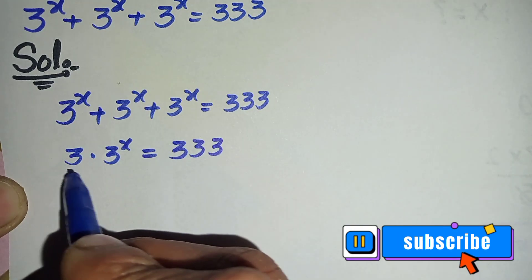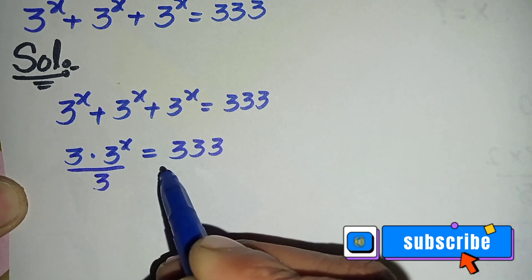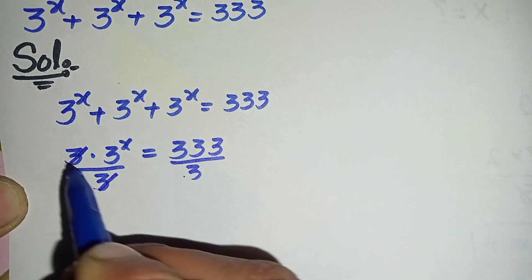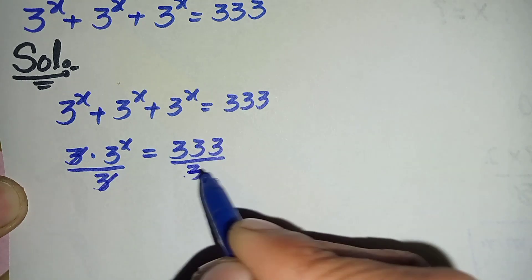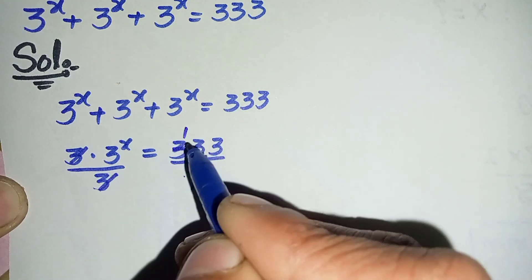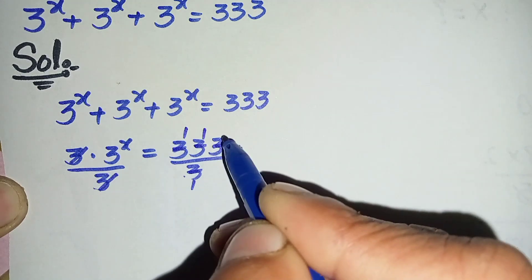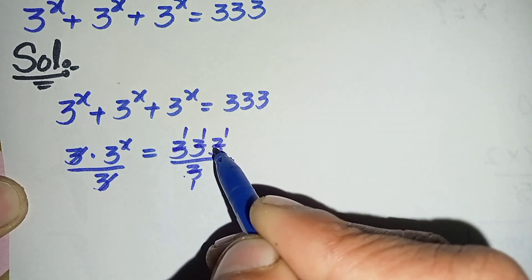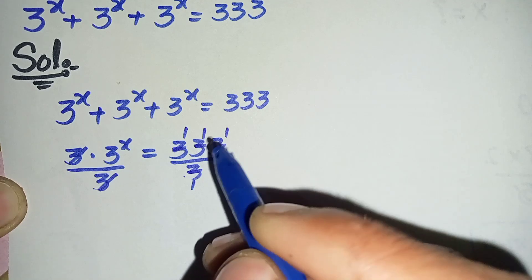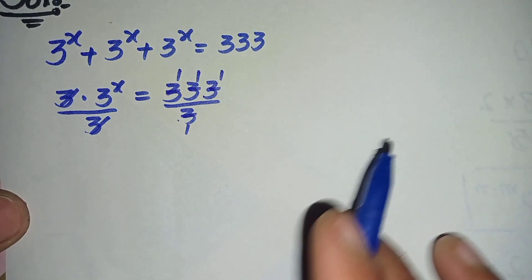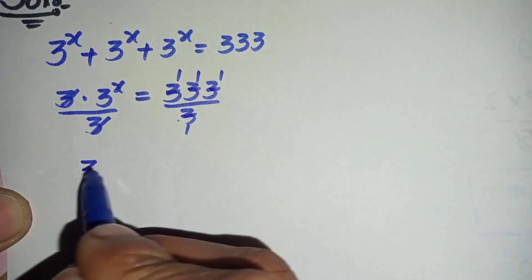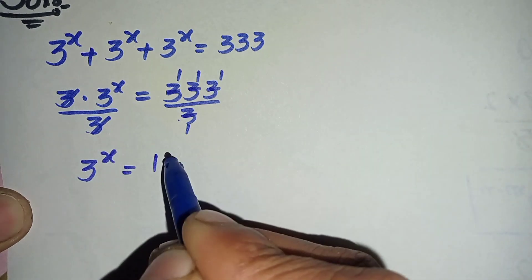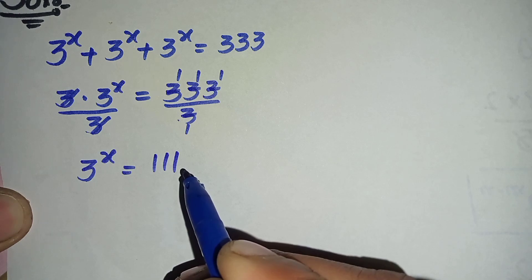Now let's divide both sides by 3. This 3 and this 3 will cancel with each other, and 3 times 1 is 3 on the left side. By dividing 333 by 3 gives 111. So further it will become 3 raised to power x is equal to 111.